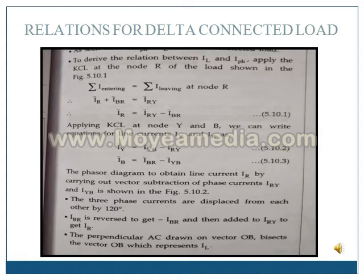In case of delta connected load, line voltage is equal to phase voltage, and we need to derive the relation between line current and phase current. We will derive this relation by drawing the phasor diagram. On the phasor diagram, the reference values are phase values — the three phase currents IRY, IYB, and IBR, shown displaced at an angle of 120 degrees from each other.